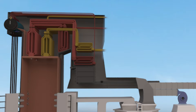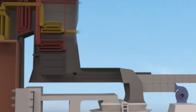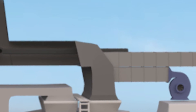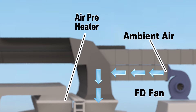This video focuses more on FD Fans. FD Fans are backward curved, airfoil shaped centrifugal fans located at the inlet of the boiler. As shown here, they draw ambient air from the atmosphere and force it into the furnace through the air pre-heater. These fans operate under clean conditions and therefore are easy to maintain.